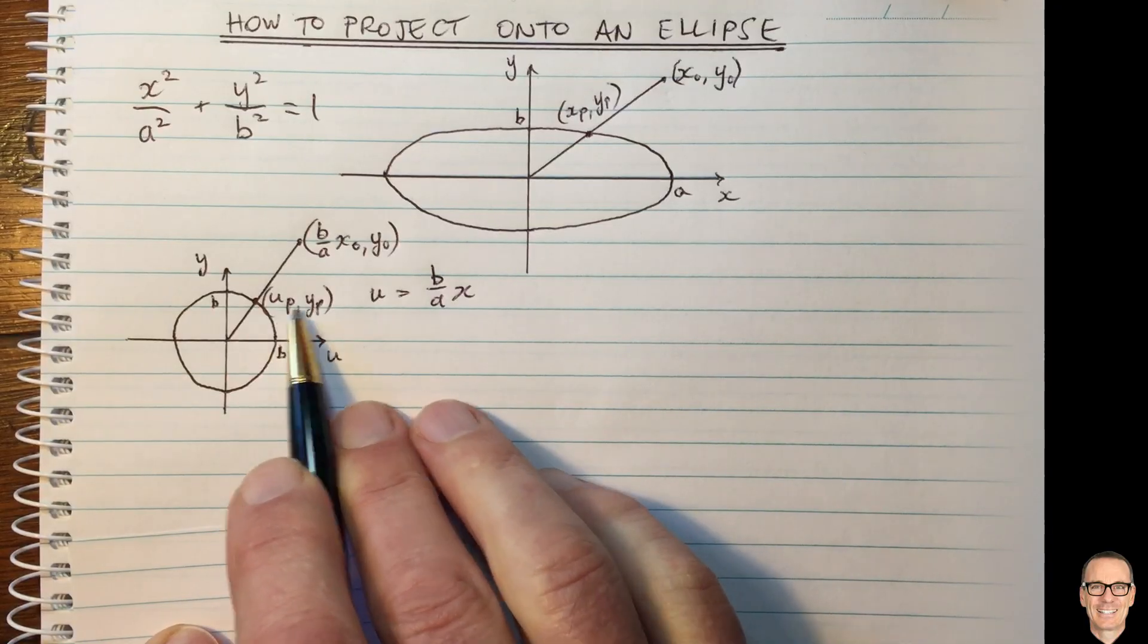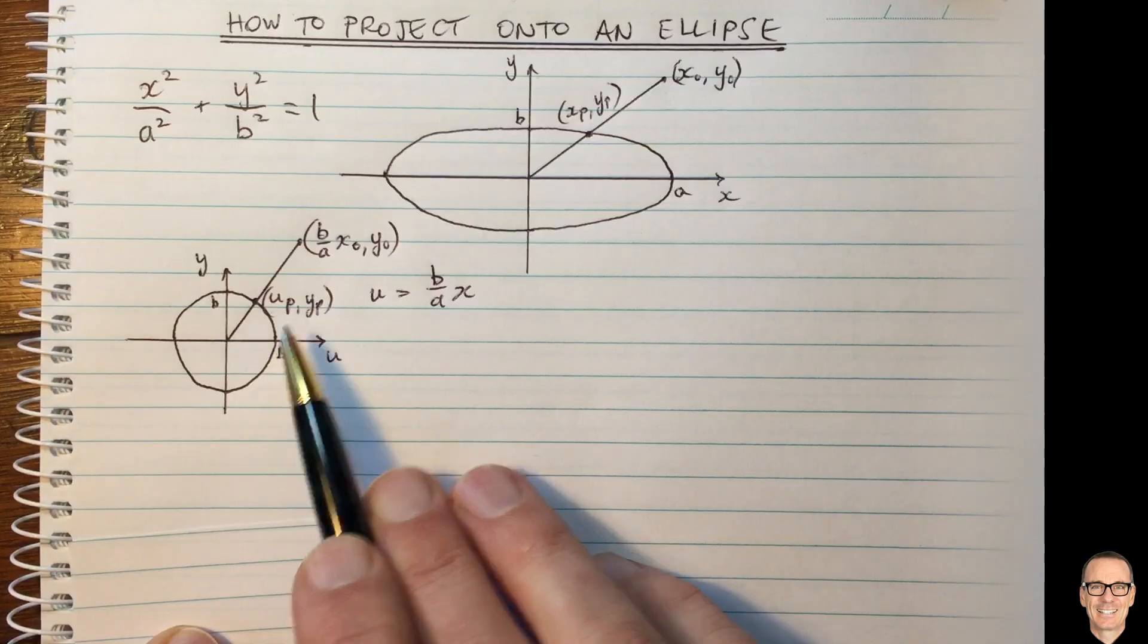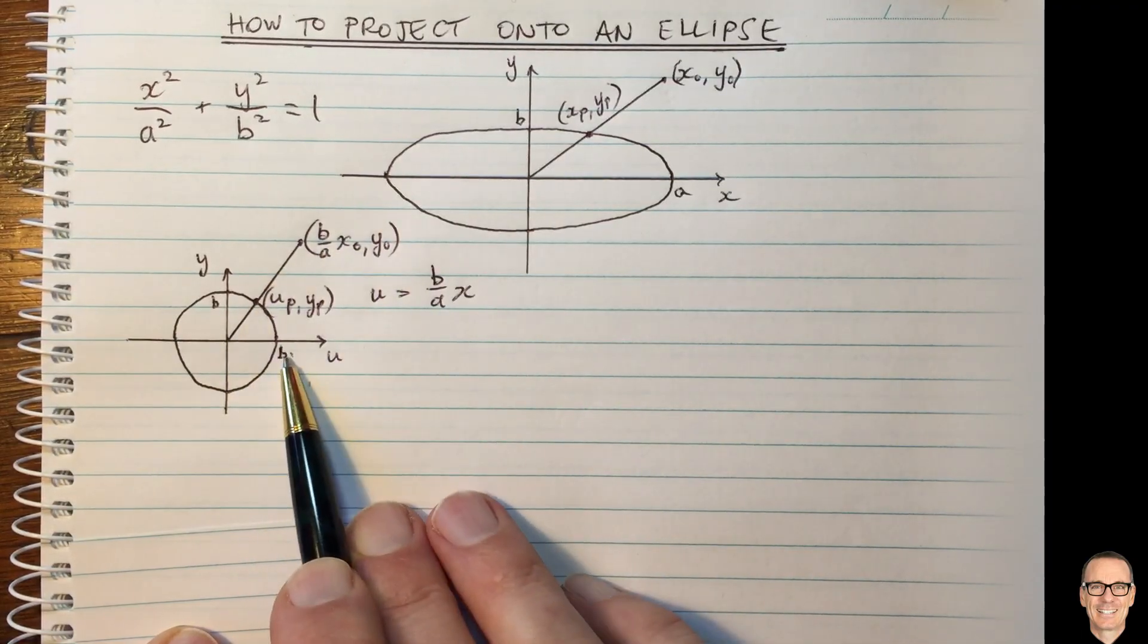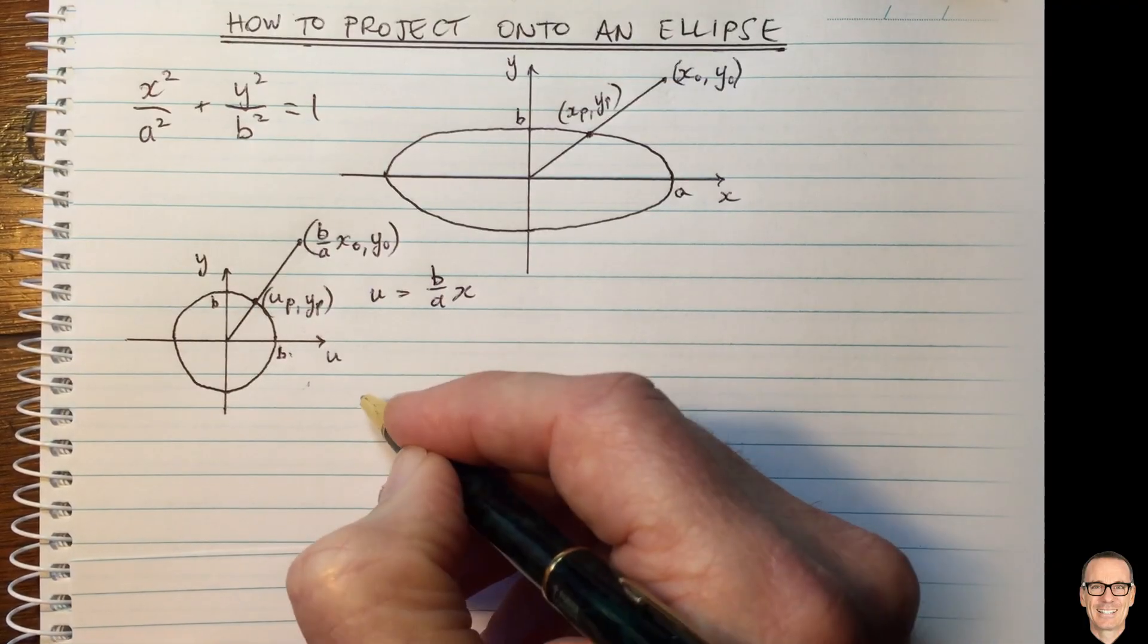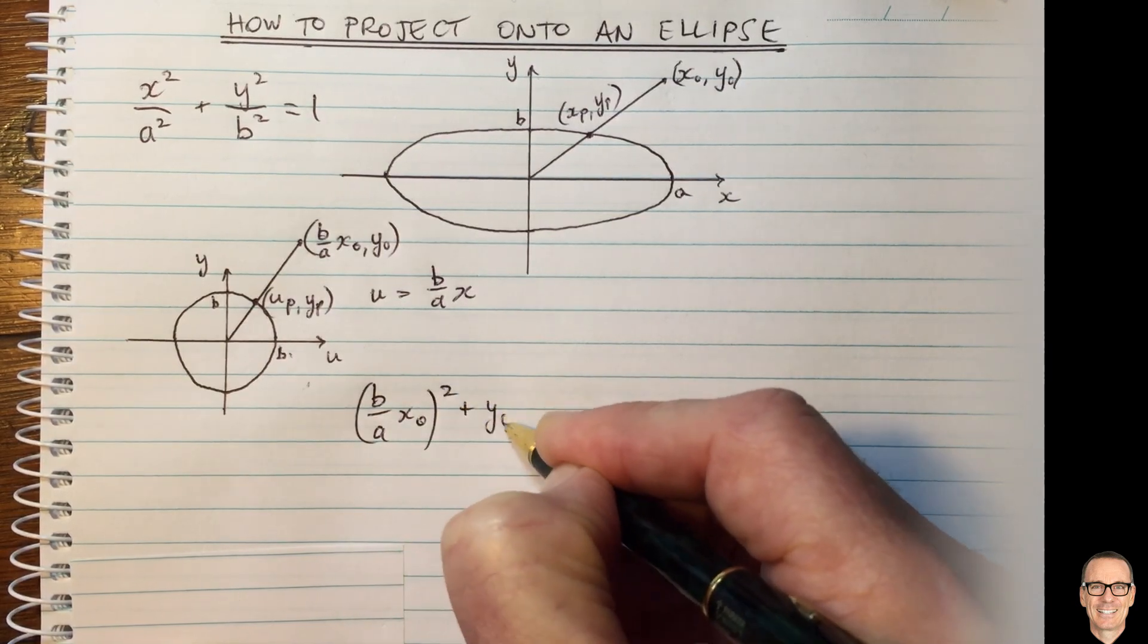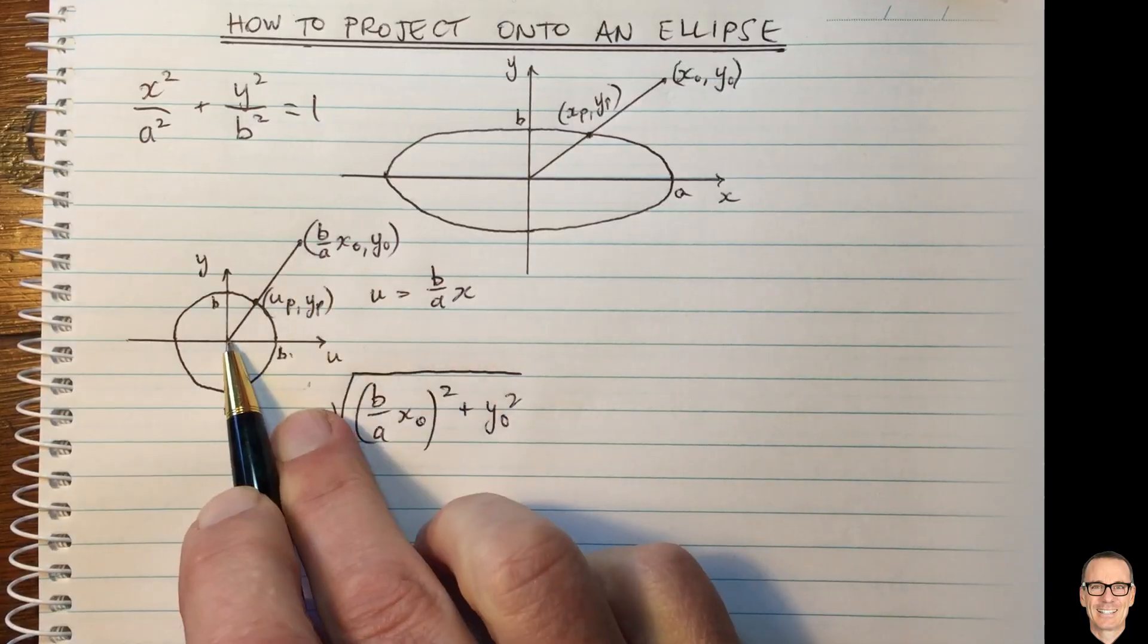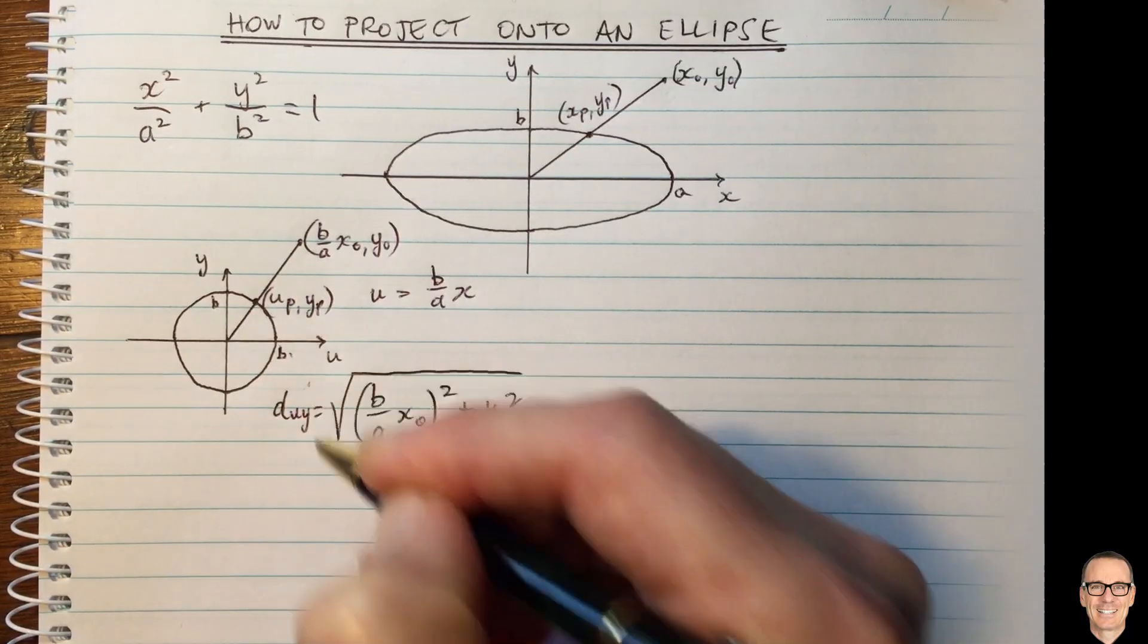Now how do we find that? Well we can find the distance along this line and then scale this point by dividing by that distance and multiplying by b. So the distance along that line is of course the square root of b divided by a x0 squared plus y0 squared, all square rooted. So that's the distance along that line and I'm going to call that duy.